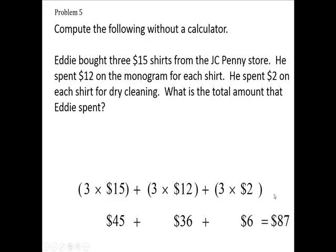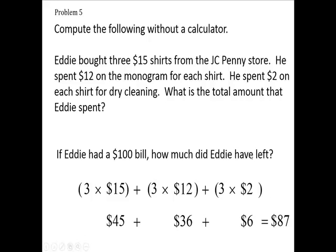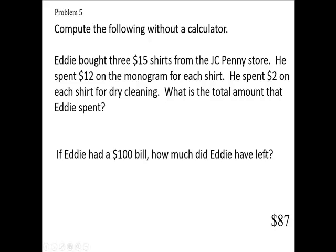Now, the next question: if he had a $100 bill, what's his change? How much did he have left over? We're going to take $100 minus the $87. Going to have to borrow one from here, makes 9, makes this 0 into a 10. 10 minus 7 is 3, 9 minus 8 is 1. So we had $13 left over.